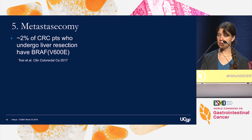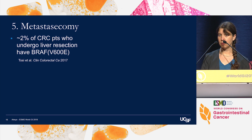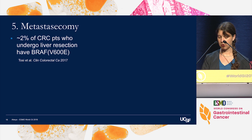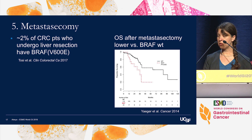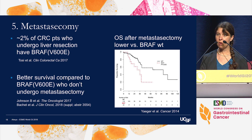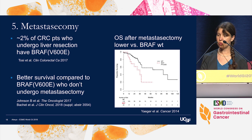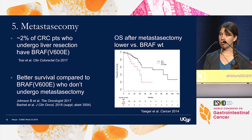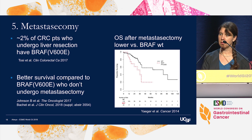Regarding metastatectomy: BRAF V600E mutations are underrepresented in series of colorectal cancer patients who undergo liver resection, which is not surprising given the pattern and pace of disease spread. Overall survival after metastatectomy is lower in patients with BRAF mutations compared to BRAF wild-type. However, among patients with BRAF V600E mutations, survival is better among those who undergo surgical resection of metastases. My recommendation is to use especially careful patient selection, including consideration of laparoscopy prior to any major operation, as these patients may have occult peritoneal disease not visualized on imaging.